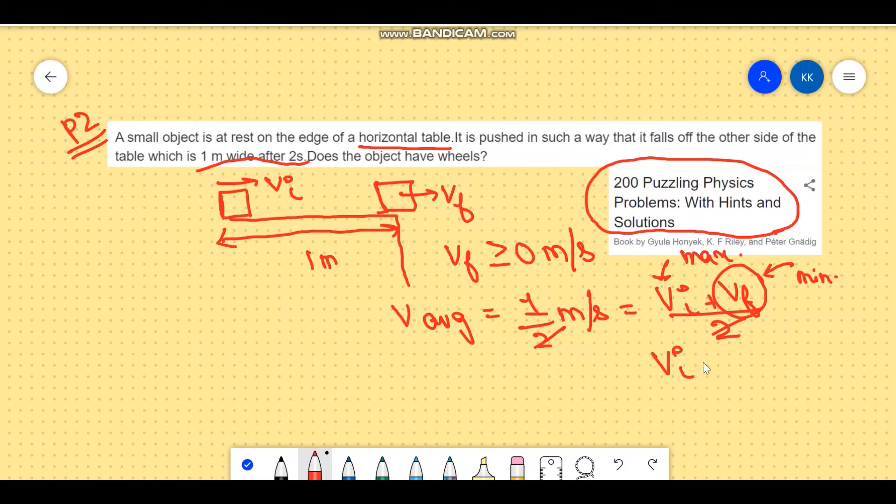So we get the initial velocity to be one meter per second. This is the maximum value of the initial velocity. Also we understand that it went from one meter per second to zero meters per second in two seconds.